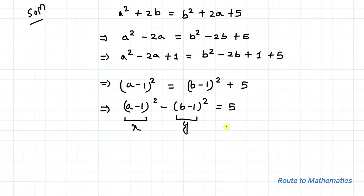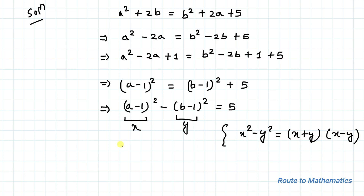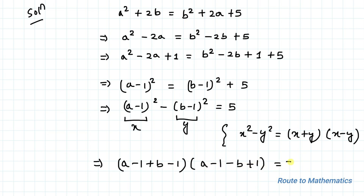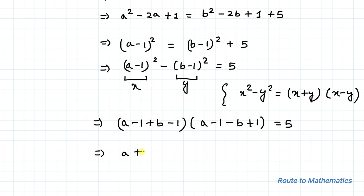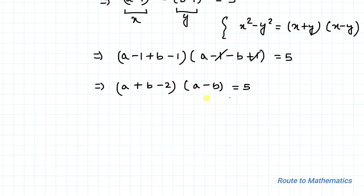Let's take (a - 1) as x and (b - 1) as y. We can apply the algebraic identity x² - y² = (x + y)(x - y). By applying this identity we can write (a - 1 + b - 1)(a - 1 - b + 1) = 5, which implies (a + b - 2)(a - b) = 5.